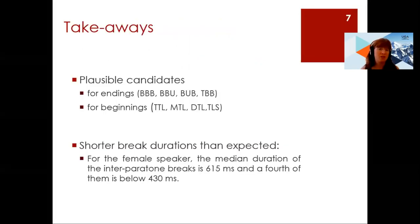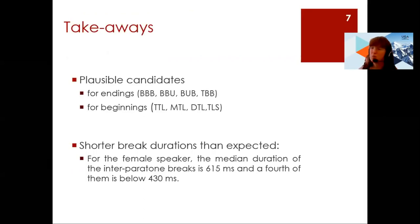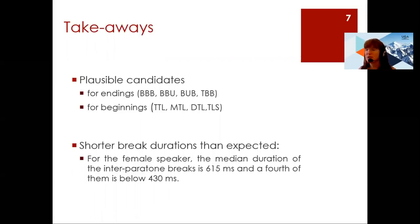To conclude, the main takeaways are: for endings, the identified candidates are basically BBB and variants; and for beginnings, the identified candidates are variants of TLS with potential breathing in M just before. And finally, as noted on the slide, interperitone breaks were shorter than expected.